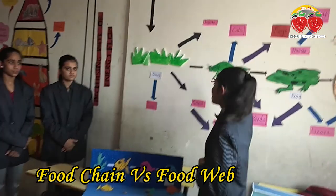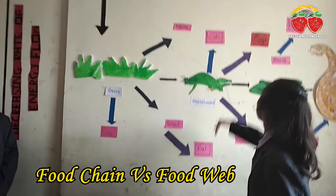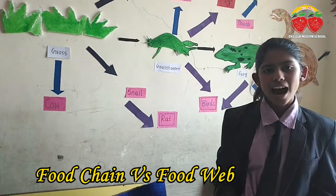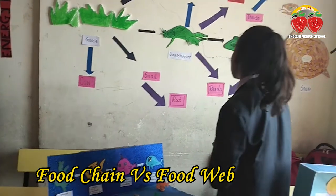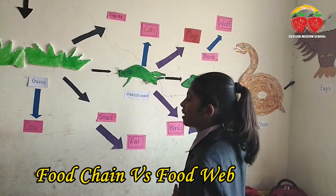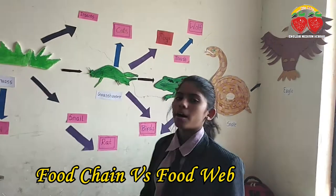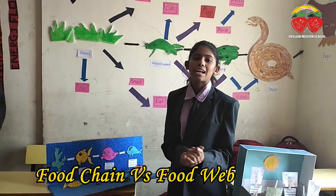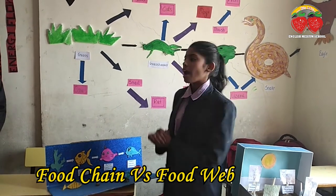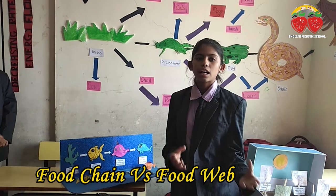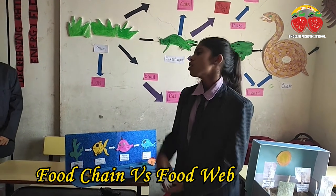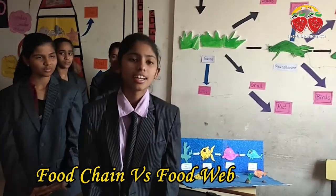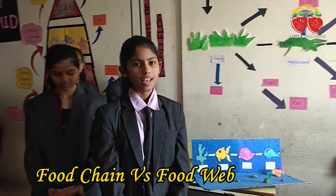The rat eats the grasshopper, and then this rat is eaten by the wolf. The frog eats lizards, insects, and snake. Then this frog is eaten by the snake, and the snake is eaten by the eagle. But before the snake is eaten by the eagle, the snake eats the wolf and lizards. When these are finally dead, they are decomposed by decomposers. This is the food web.